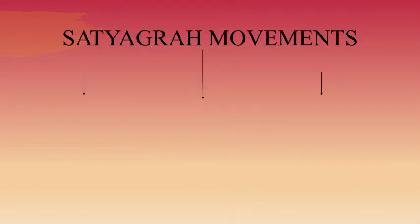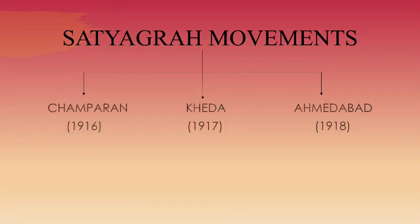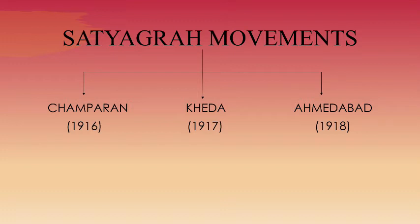Gandhi Ji started many Satyagraha movements. In 1916, he traveled to Champaran in Bihar to inspire the peasants to struggle against the oppressive plantation system. Then in 1917, he organized a Satyagraha movement in support of the peasants of Kheda in Gujarat, who were affected by crop failure and were not in a condition to pay revenue. The very next year, in 1918, Mahatma Gandhi went to Ahmedabad to organize a Satyagraha movement amongst cotton mill workers.